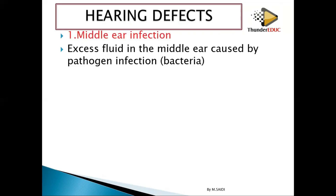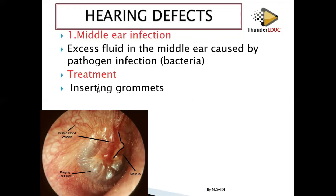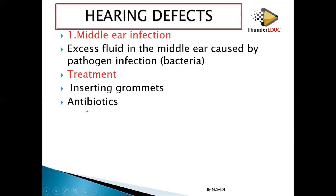Excess fluid in the middle ear is caused by pathogen infection, specifically bacteria. Treatment: first, because fluid has formed, we need to drain it out — we insert grommets. Number two, antibiotics — because when you apply antibiotics, the bacteria will be killed. The grommet is inserted so that the fluid can drain through the tympanic membrane.